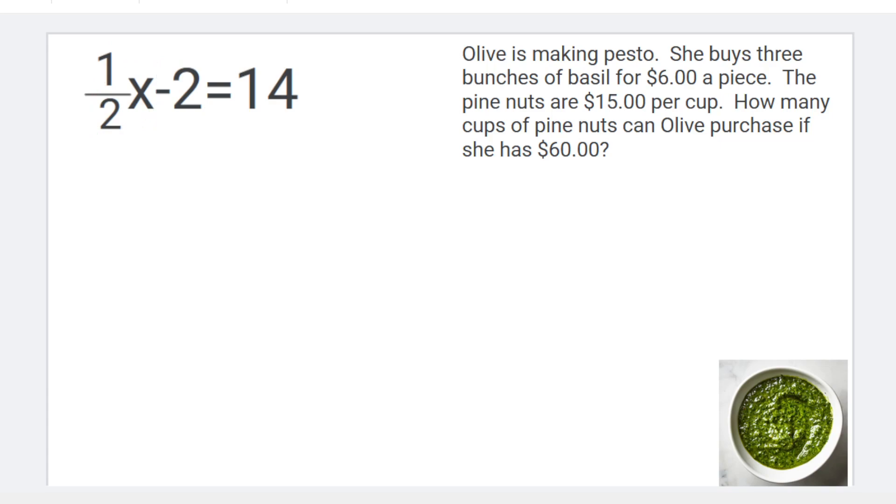I'm going to multiply the entire equation by 2 to get rid of the 1 half. Now it's worth knowing this is a type of distribution. So that 2 is going to get sent to every single term.